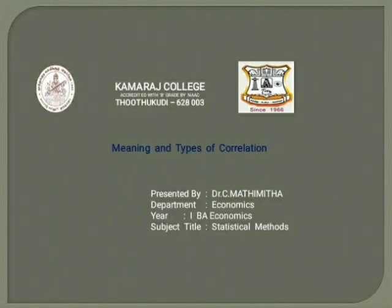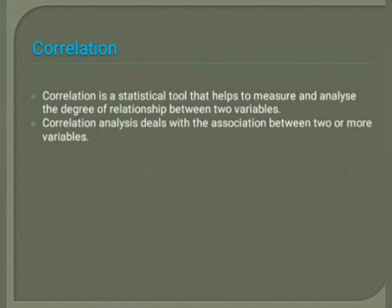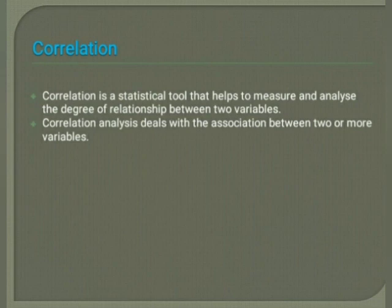In this video, we clearly explain the meaning and types of correlation. What is meant by correlation? Correlation is a statistical tool that helps to measure and analyze the degree of relationship between two variables. Correlation analysis deals with the association between two or more variables. Correlation means a relationship between two series or groups of data, if two or more quantities vary in sympathy.